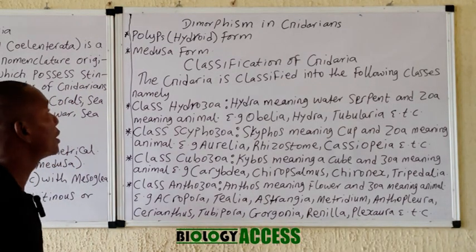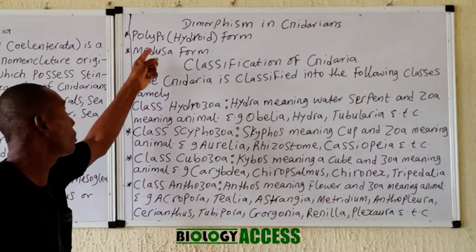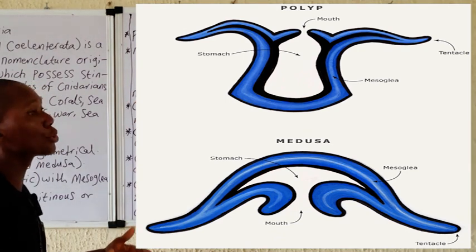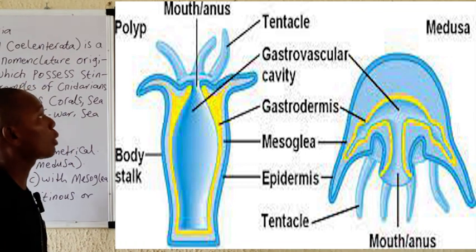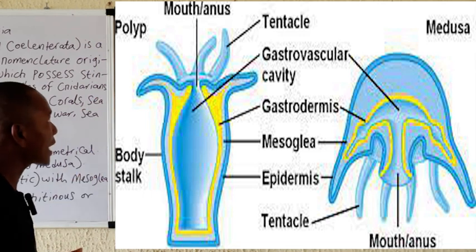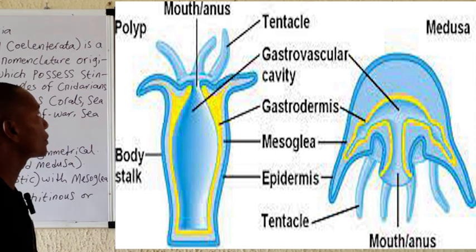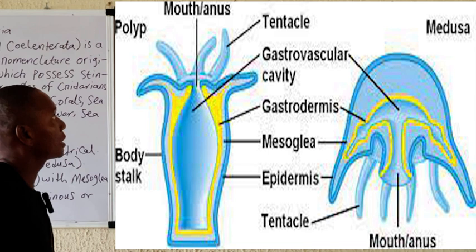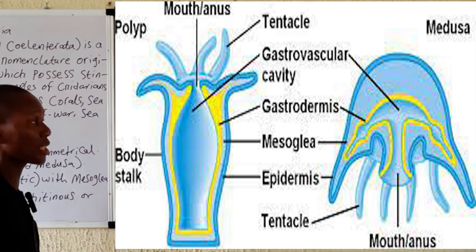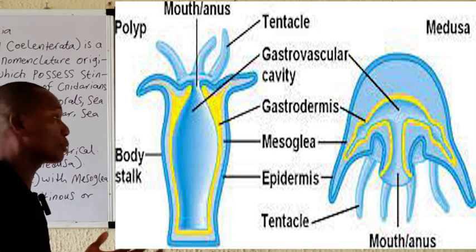In Cnidarians there is what we call dimorphism, or in some cases polymorphism. The two basic forms in Cnidaria are the polyp form and the medusa form. The polyp form is a tubular organism that has tentacles at the oral side at the upper end. The oral cavity leads to the gastrovascular cavity, and they are attached to the substratum through a base. The polyp reproduces through budding and other processes such as strobilation, and can give rise to other polyps or in some cases produce a medusa through sexual reproduction.